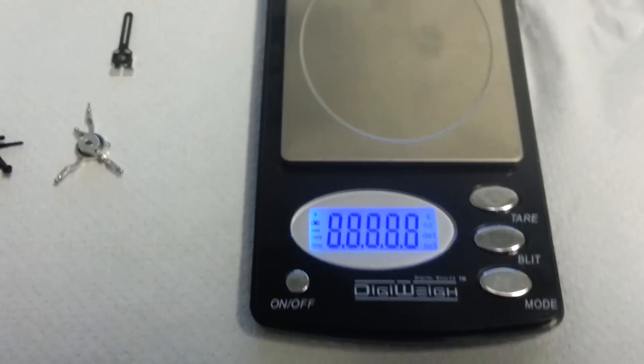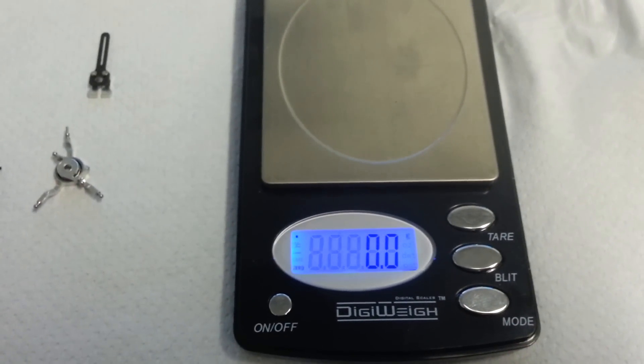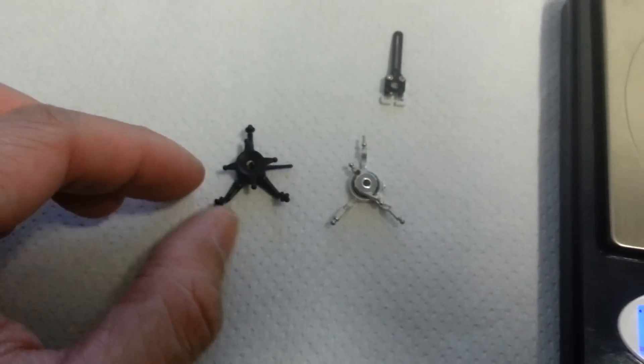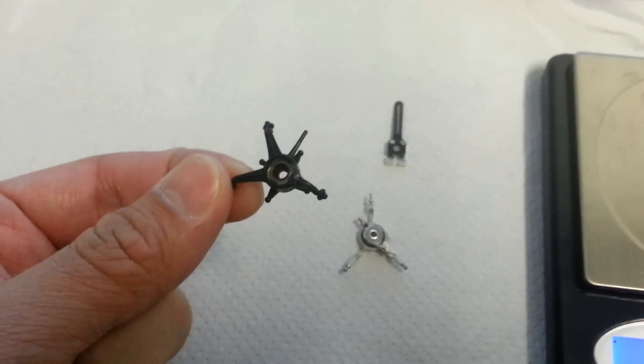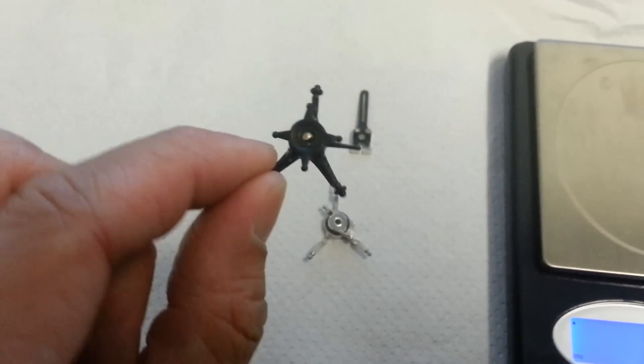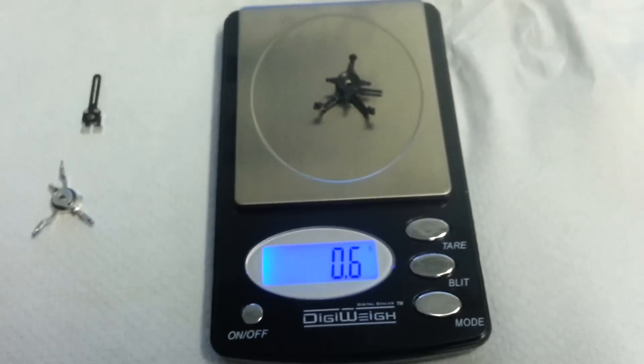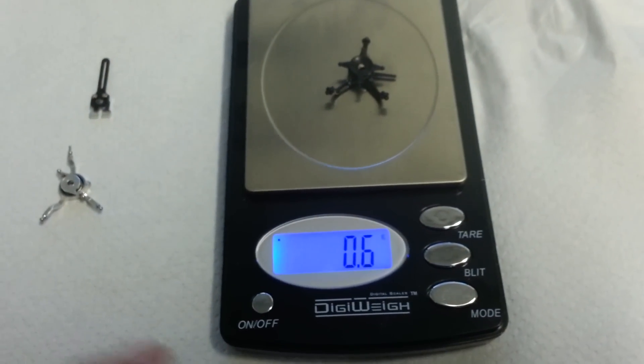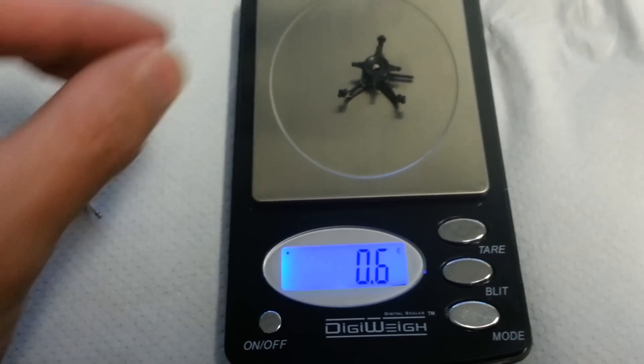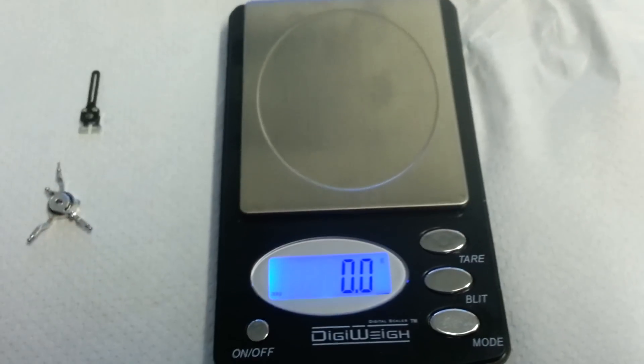So let me turn on the scale, let it calibrate. So first off, let's put the stock swash. So the stock swash does have a lot of CA on all the arms, and it does have the rubber grommets on here. So let's put it on and show you guys how much all that weighs. So all that weight is 0.6 grams. So let me take this off, let the scale calibrate.